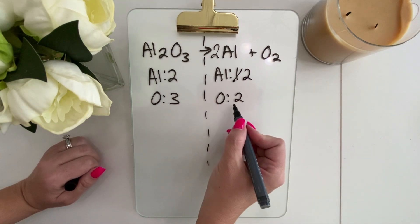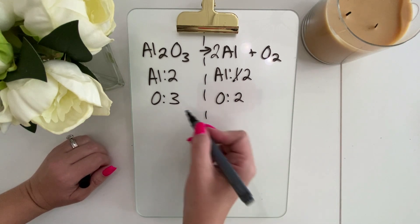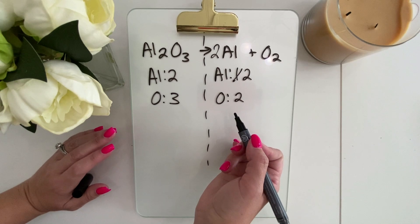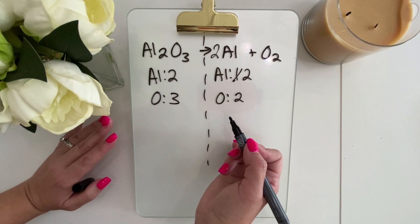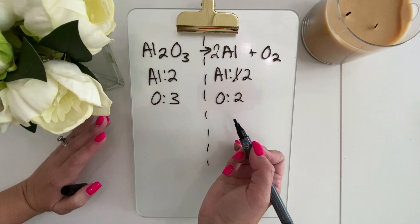Now we need to work on our oxygen. You can see that we have an even and an odd number, so we really need to find the lowest number coefficient that will give us an equal multiple of both.